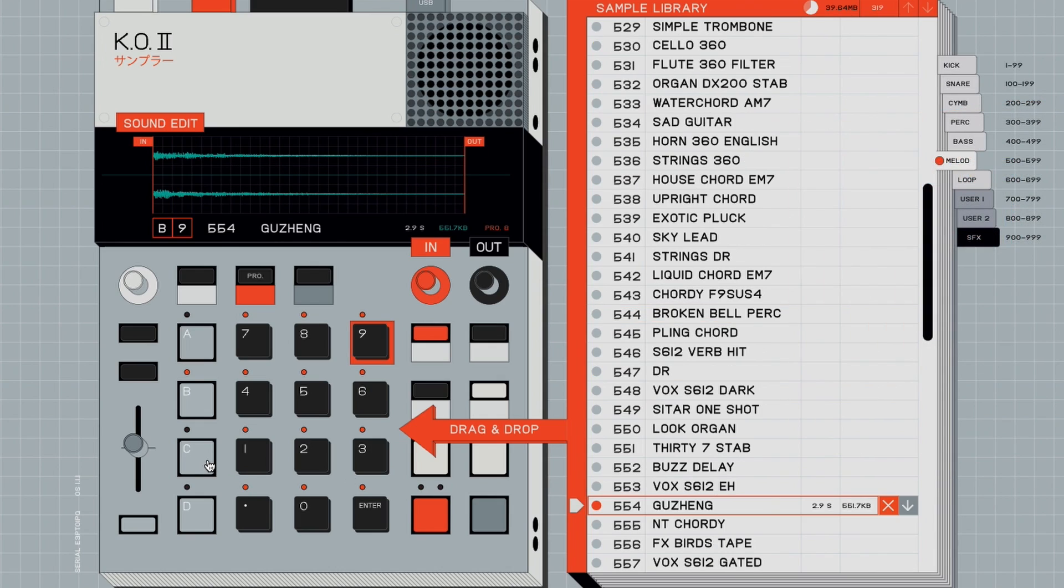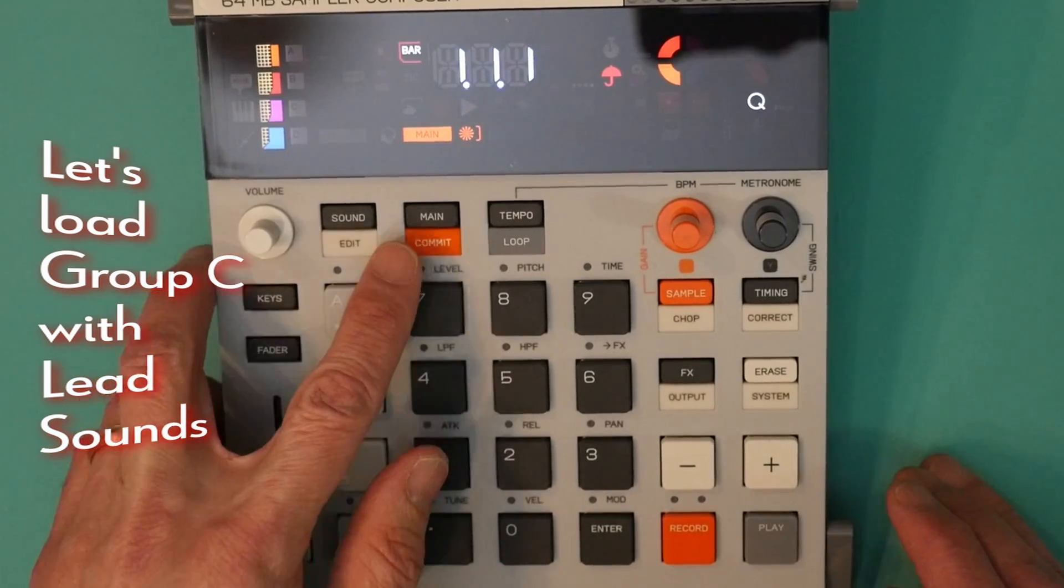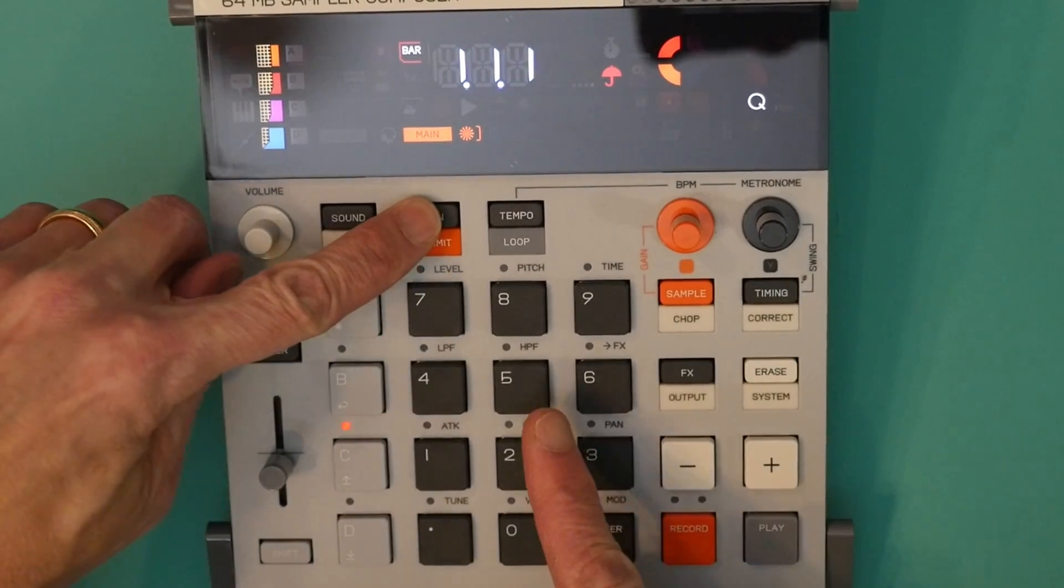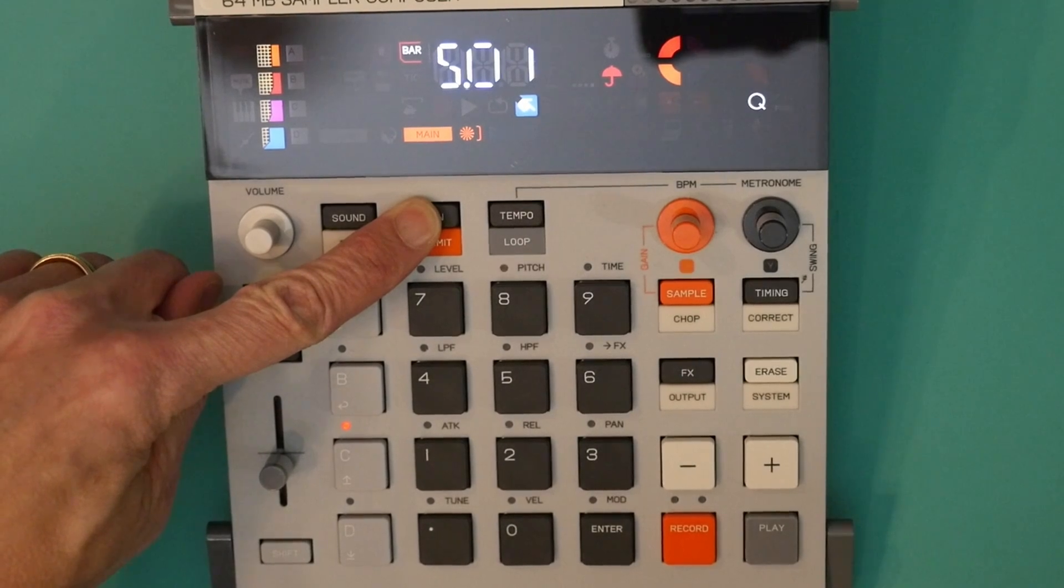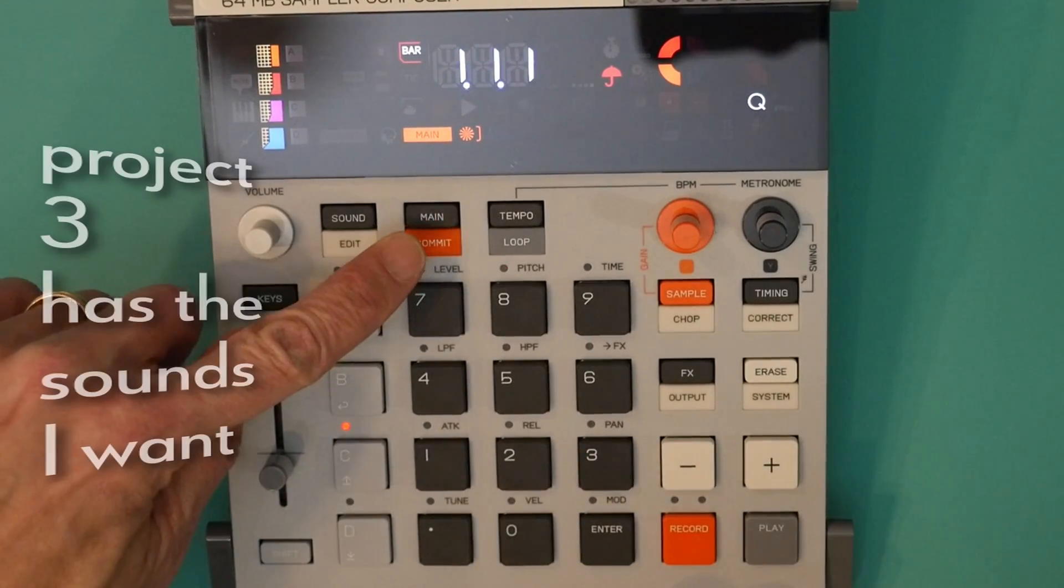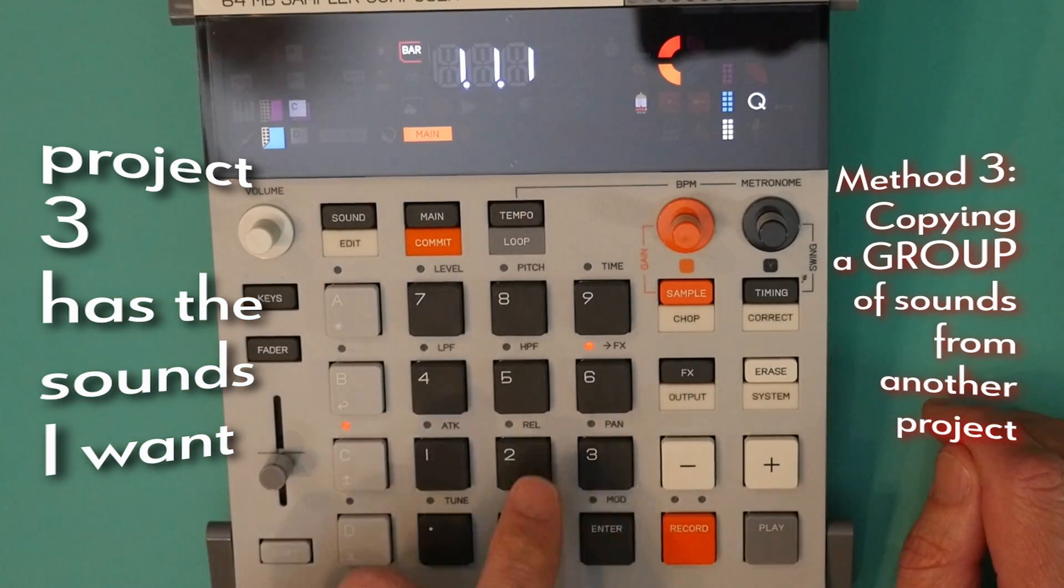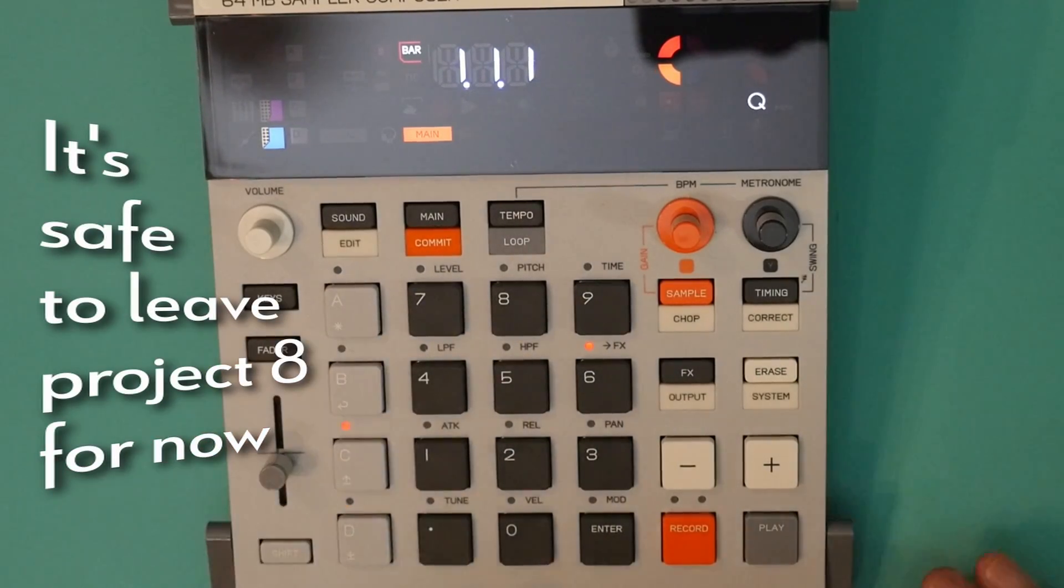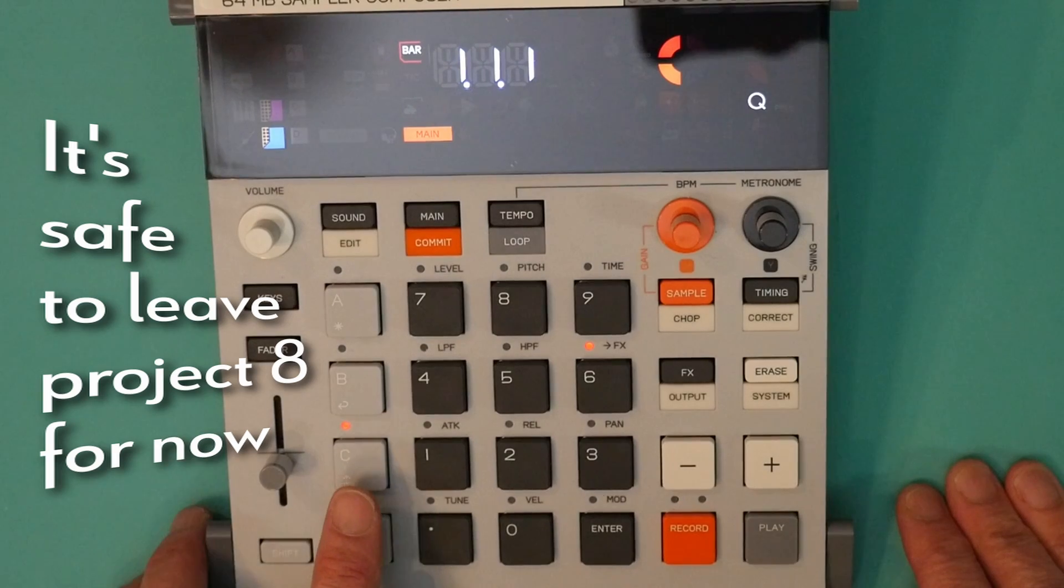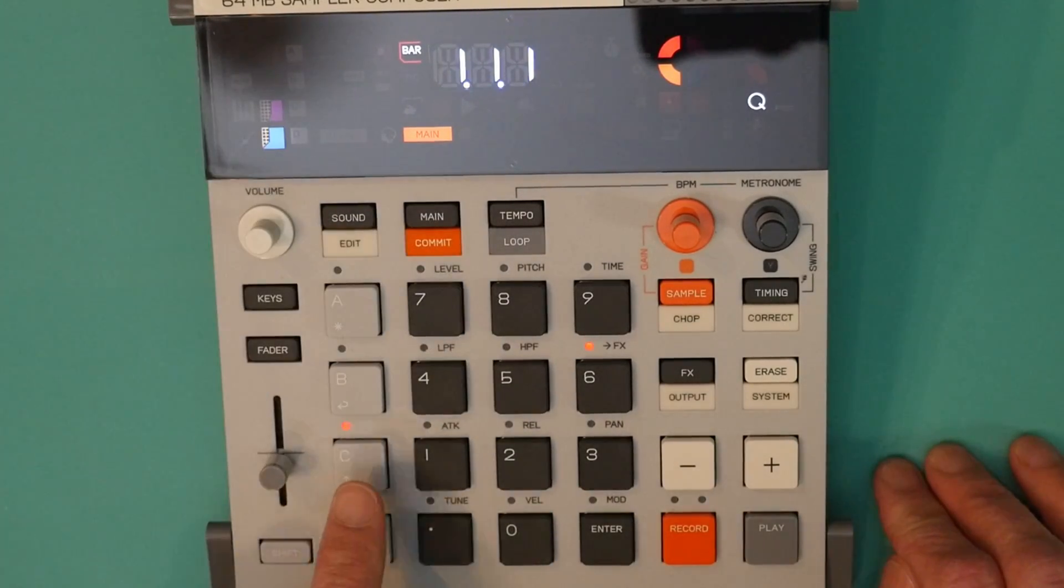Now for group C. Let's use the third method for group C, copying and pasting a whole group of sounds from another project. Now first, let's check that we're on project 8 still. You can see when I hold main the LED by pad 8 indicates that we're on project 8. To navigate to project 3... That's the one I want. So I'm going to copy all of the sounds that are in group C on project 3 to group C on project 8.